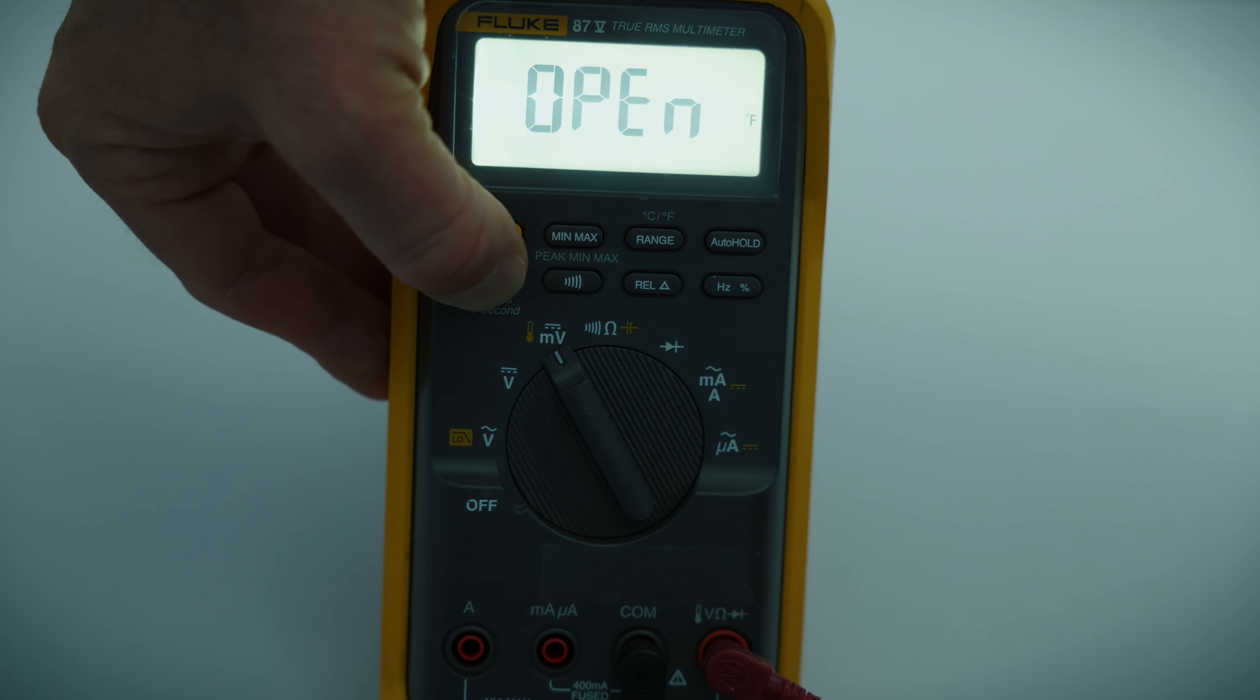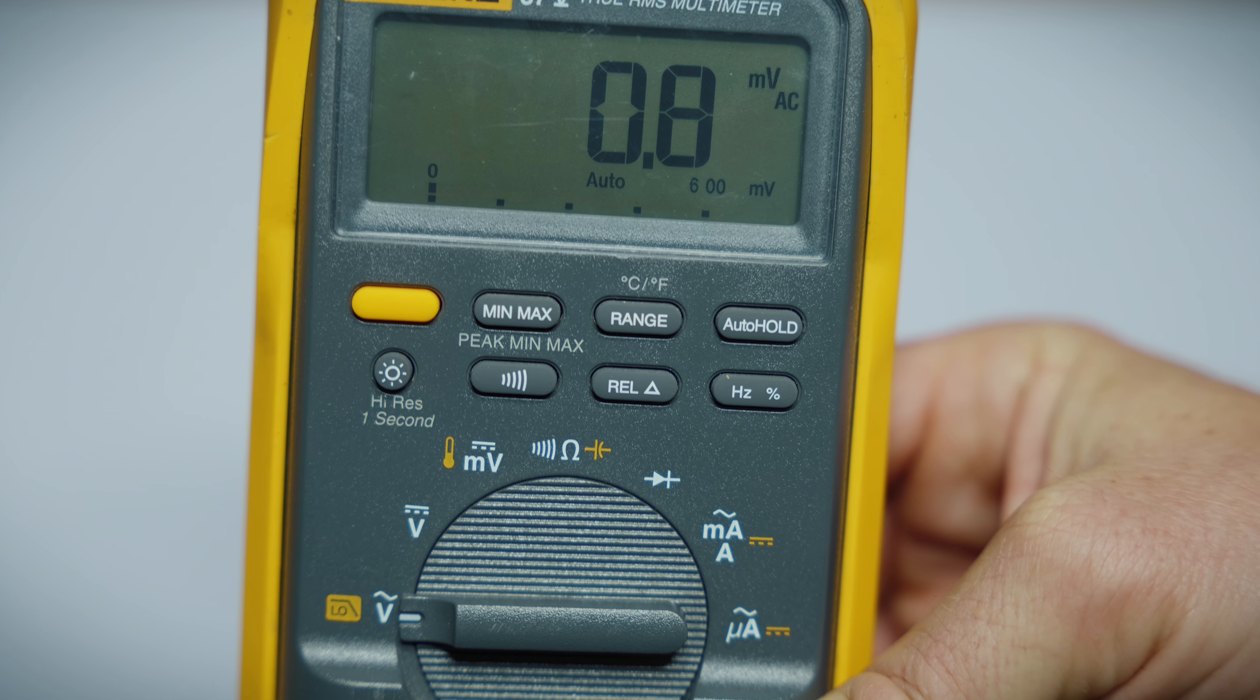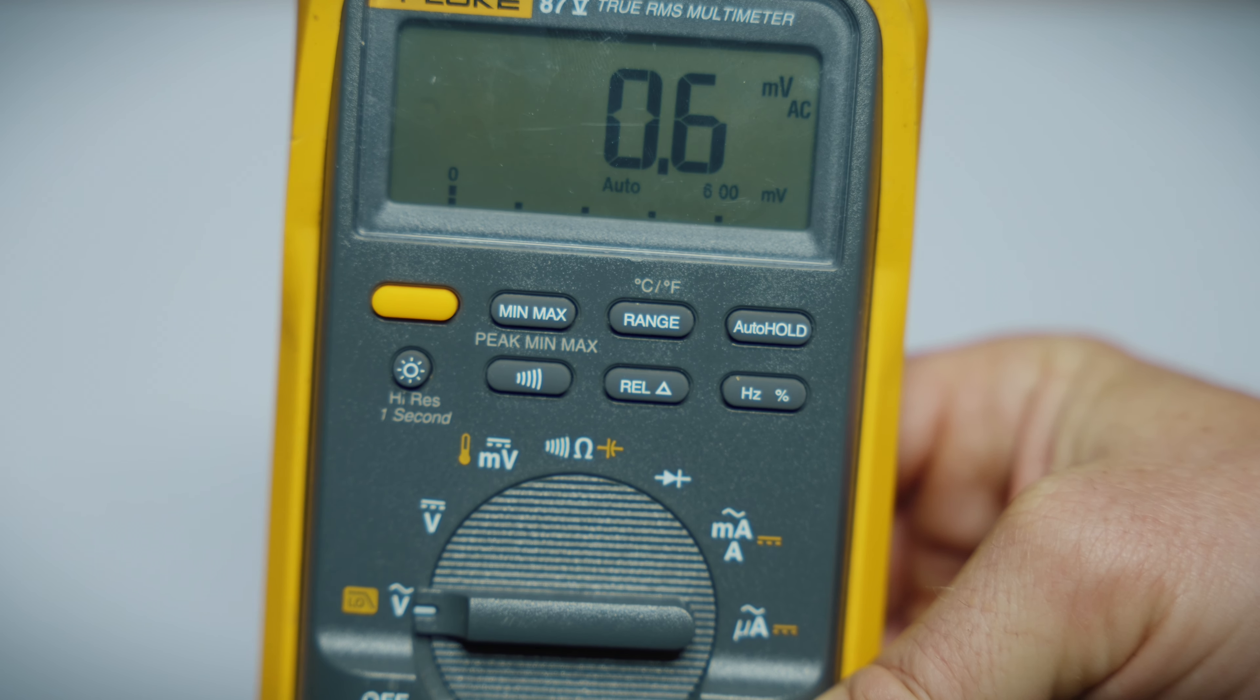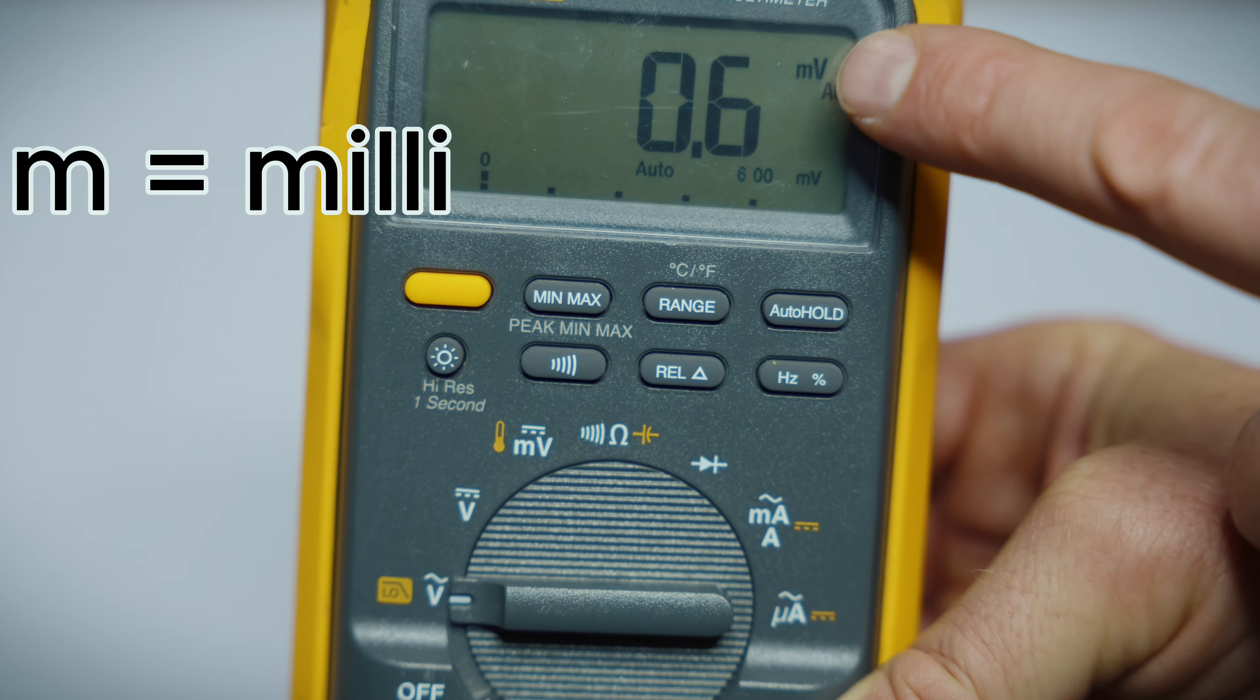One more feature some of the more expensive meters do have is if you're working in the dark, which sometimes does happen when you have to shut power off. This meter does, and a lot of them do have different light settings. Off, dim, bright. That'll just help you out when you're working in the dark.